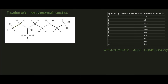Here we have an eight-carbon chain, so that's going to be oct. It's only single bonds between carbon and hydrogen, so that's octane. And then on carbon number three again, we've got a methyl branch. So that molecule is called 3-methyloctane.